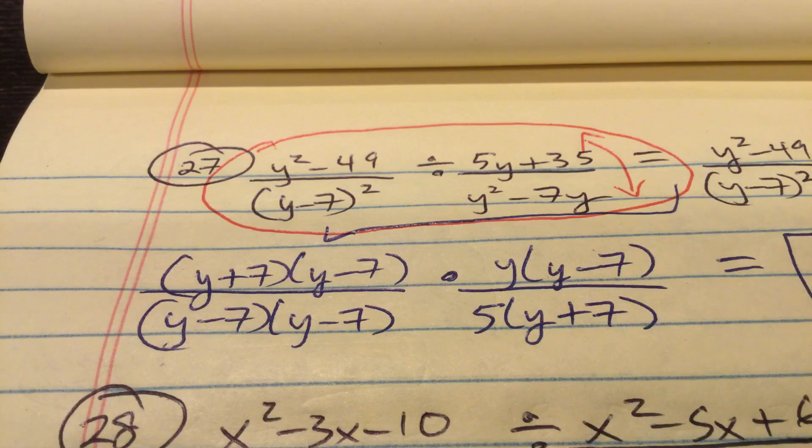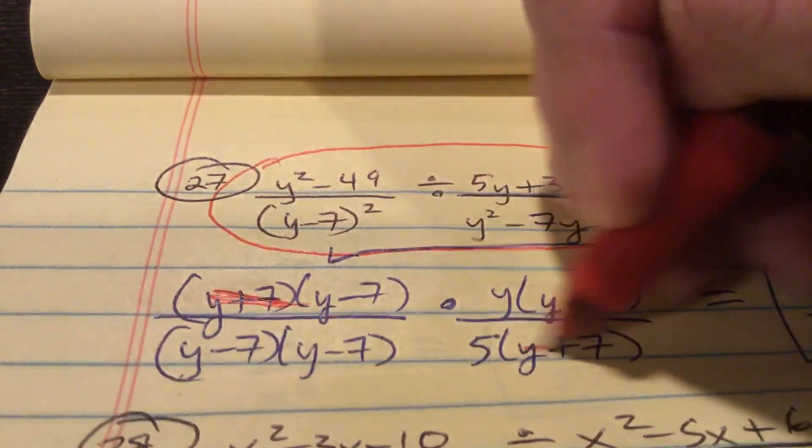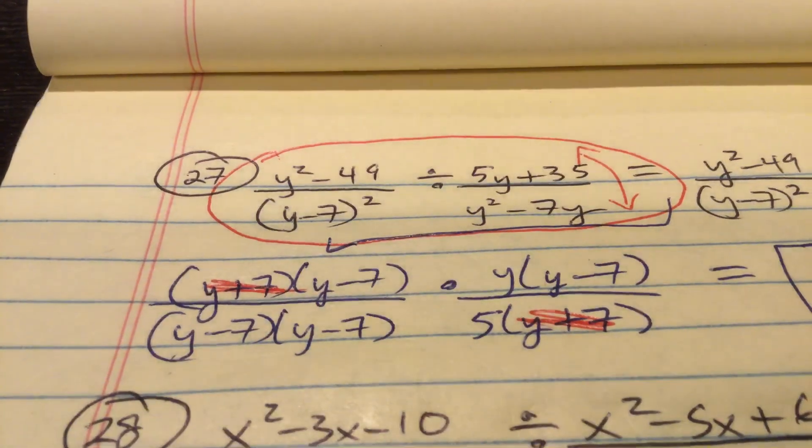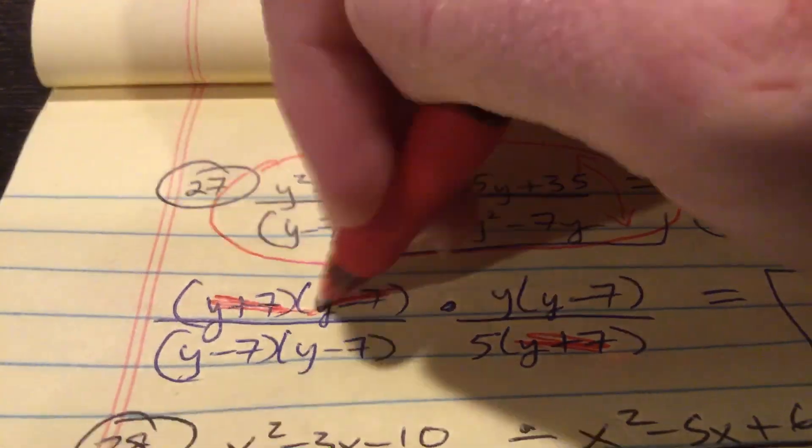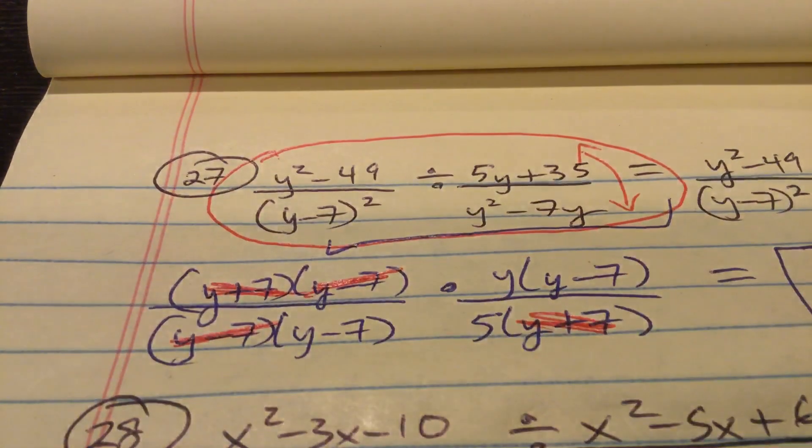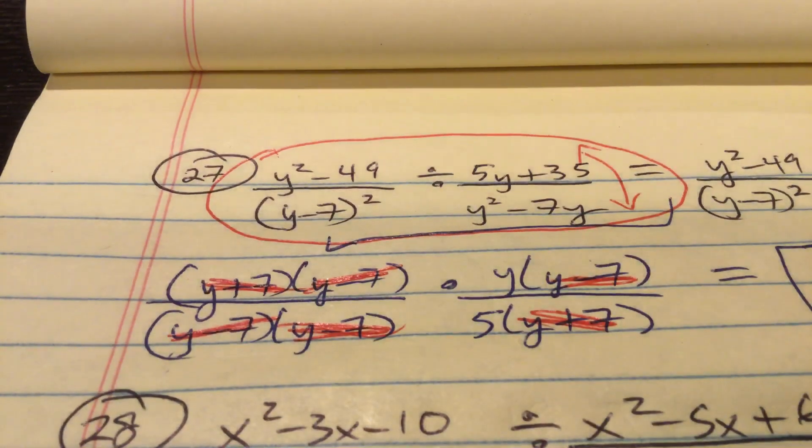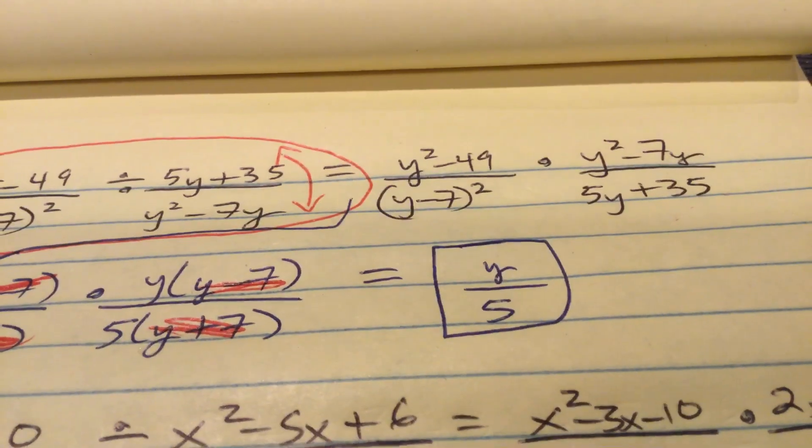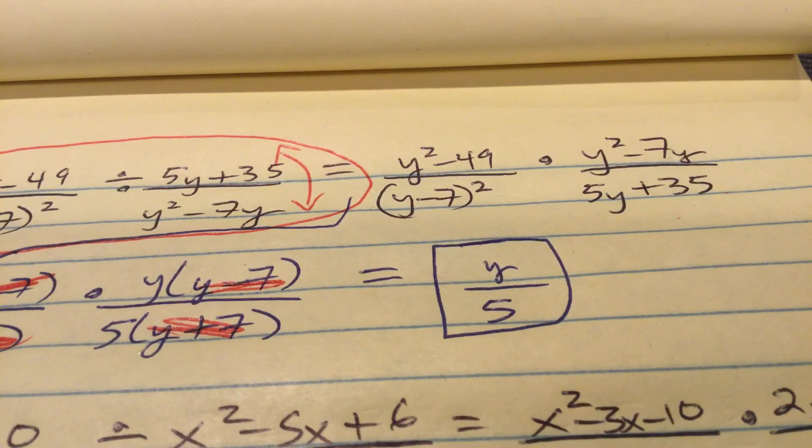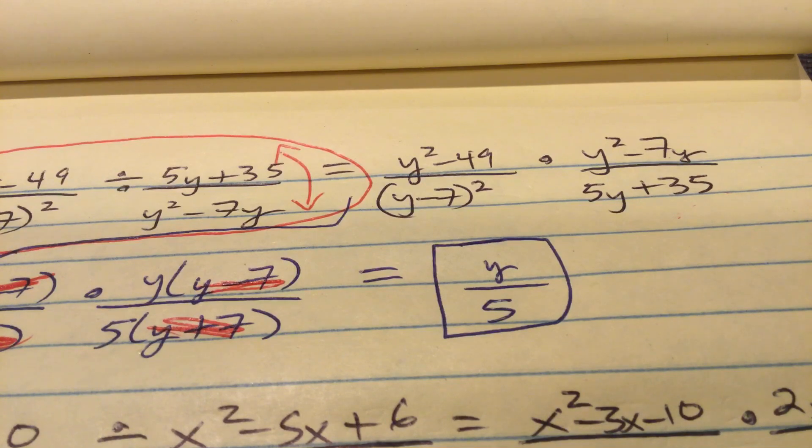There is everything factored. Then we go to simplifying, crossing out what I have in common, north and south. Alright. So, first off, y plus 7 is canceled. Then, that y minus 7 goes with that y minus 7. This y minus 7 goes with that y minus 7. I'm left with y over 5. y over 5 is my final, very simplified solution.